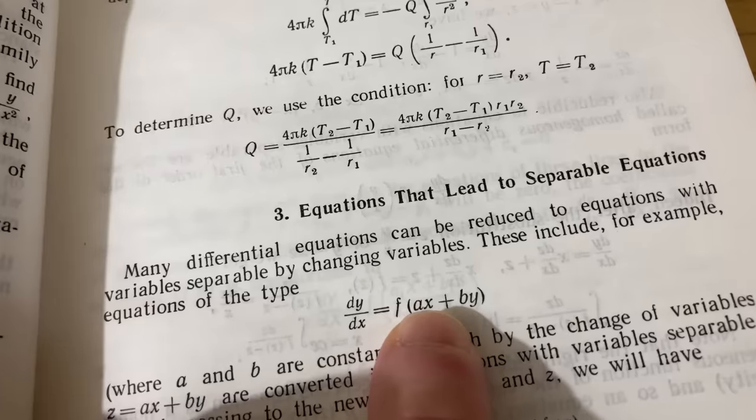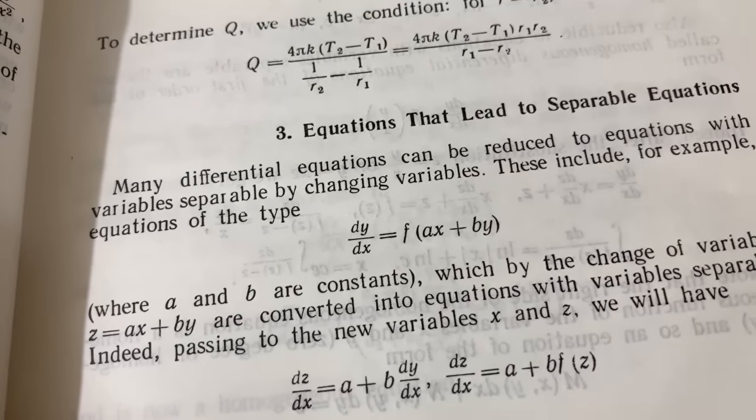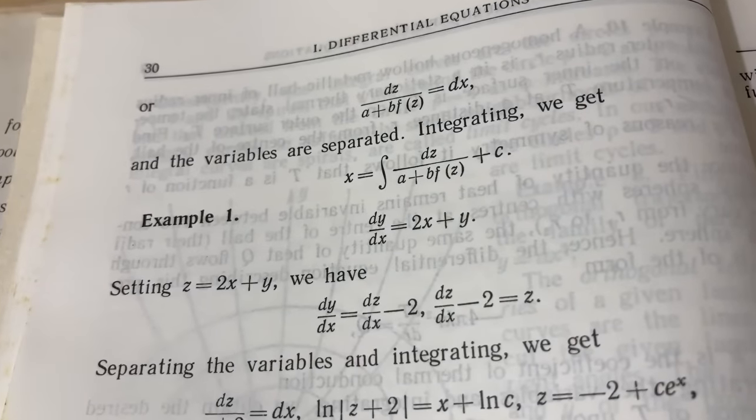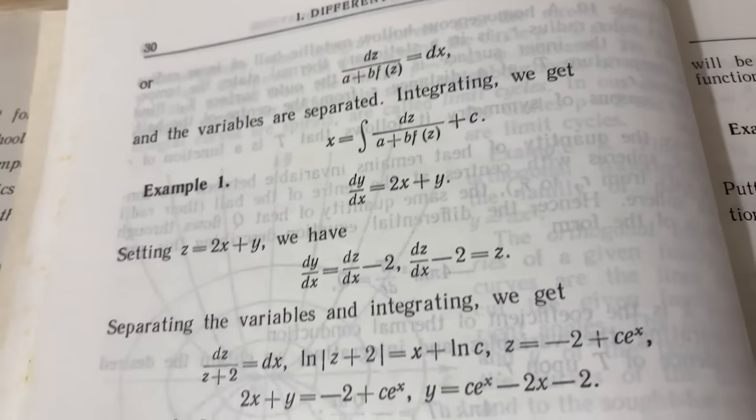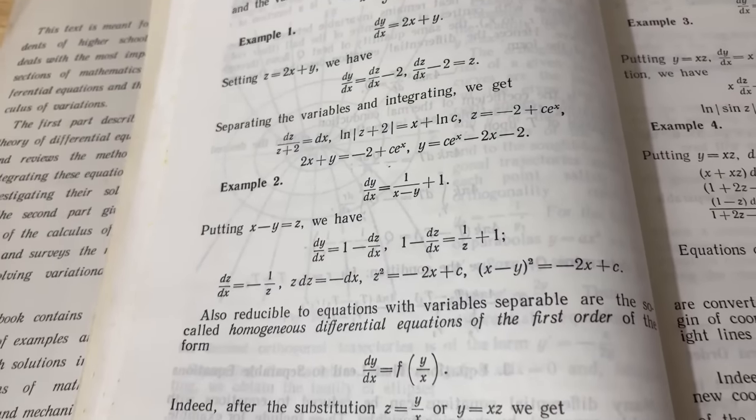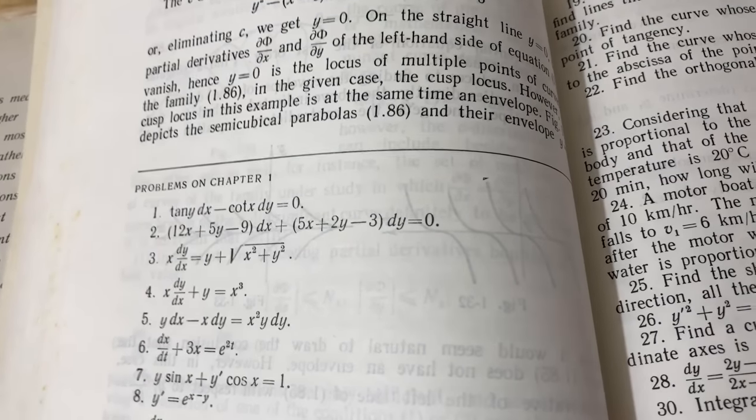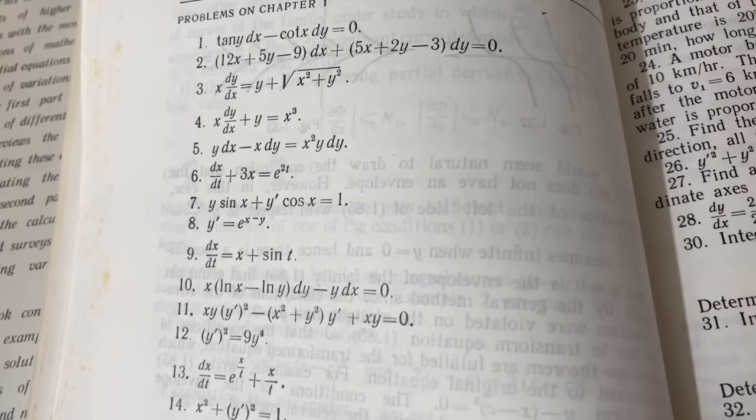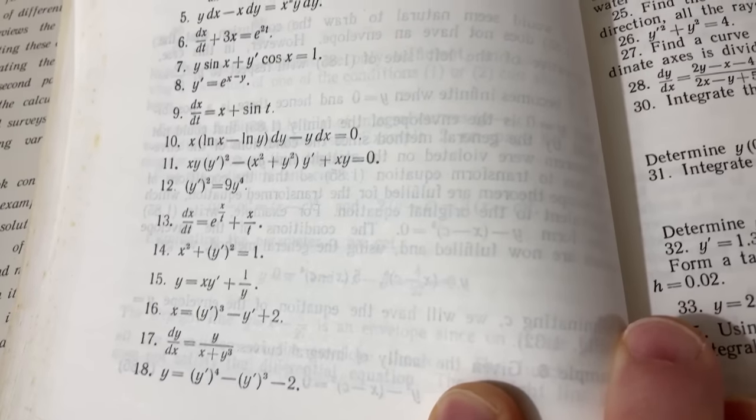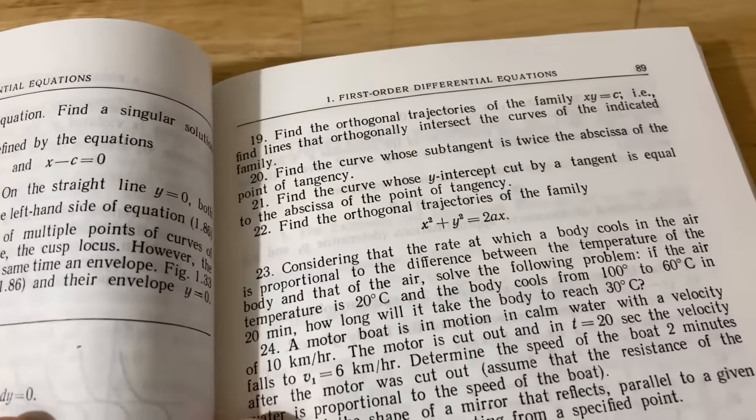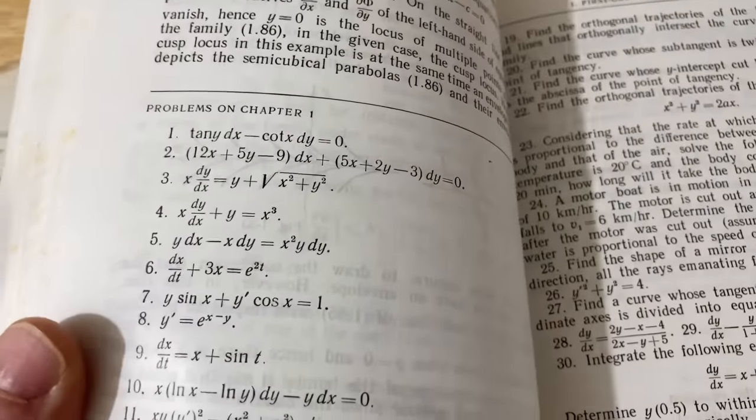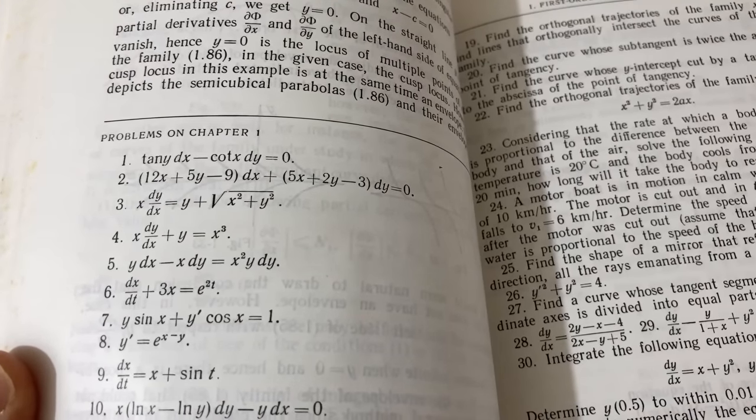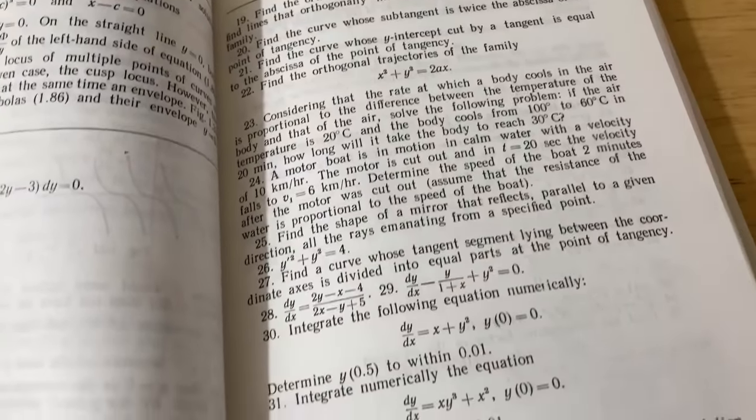And then they talk about equations that lead to separable equations. And these are also studied in a differential equations course. Basically, you make a substitution. You would let some variable be equal to ax plus by, which here apparently they use z. And then you go from there. Here's their first example. So basically, they make a substitution and it becomes separable. So again, these are all things that you would see if you took a regular course on differential equations. Now, it's quite a bit to read before you get to the exercises, but you probably want to read this book with a piece of paper and a pencil and just work through all the examples, which are really good. And there's plenty of them.